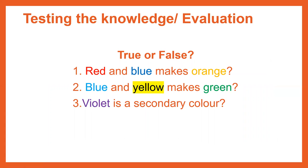Let's test our knowledge to see what we have learned from this lesson. True or false, children. Question 1: Red and blue makes orange. Question 2: Blue and yellow makes green. Question 3: Violet is a secondary colour. Well done, children, for sorting out your primary and your secondary colours, and for learning a little bit more about Pierre Mondrian.